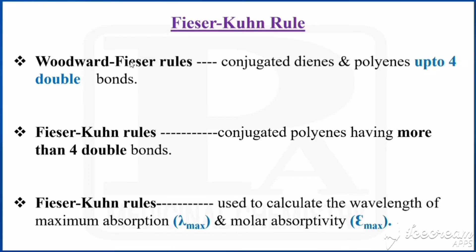Dear students, we have already seen Woodward-Fieser rules. In this class, we are going to see the Fieser-Kuhn rule. The Woodward-Fieser rule is used to calculate lambda max values for conjugated dienes and polyenes up to 4 double bonds. If the polyene has more than 4 double bonds, the Fieser-Kuhn rule can be used.